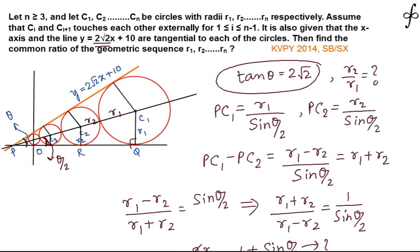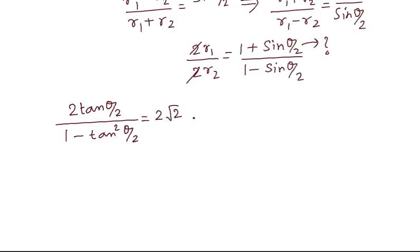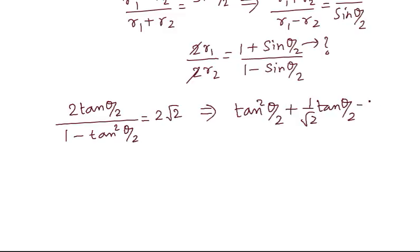We already know tan θ = 2√2. Using the double-angle formula: tan θ = 2·tan(θ/2) / (1 − tan²(θ/2)) = 2√2. This gives the quadratic: tan²(θ/2) + (1/√2)·tan(θ/2) − 1 = 0, from which tan(θ/2) can be calculated.